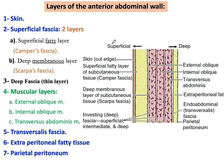Starting from superficial to deep, we have the skin. Deep to it there is a superficial fascia. Deep to the superficial fascia we have the deep fascia covering the muscular layer. Deep to the muscular layer there is the transversalis fascia, and deep to it there is another fatty layer, which is lined by peritoneum.